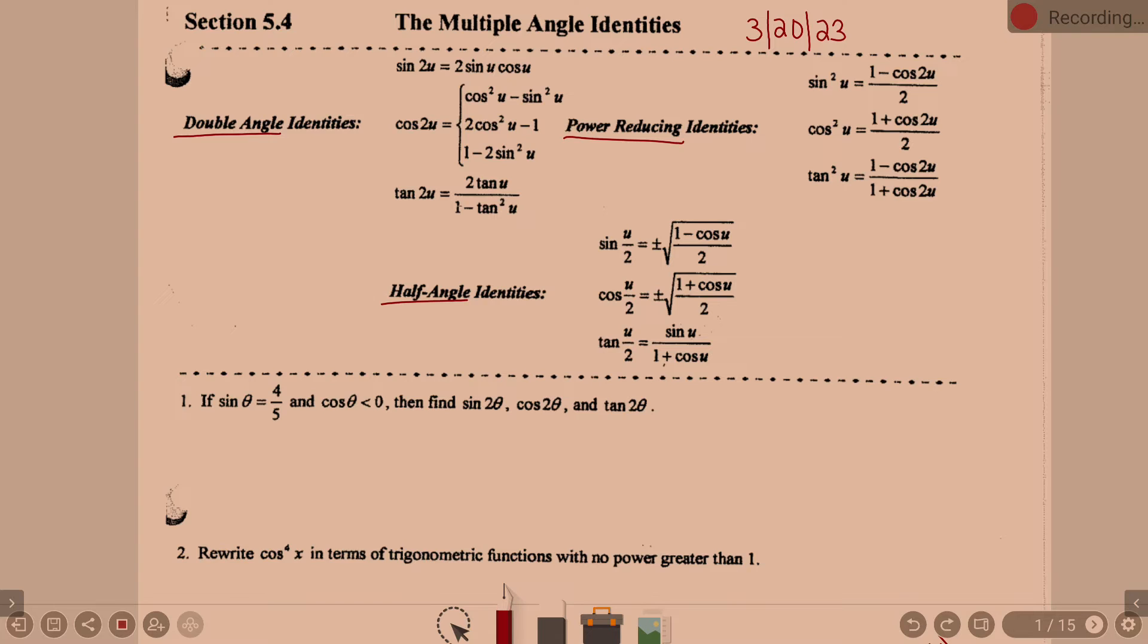Now, we'll very briefly start looking at number 1. It should sound a little familiar. If sine of theta is 4 fifths and cosine of theta is less than 0, then find sine of 2 theta, cosine of 2 theta, and tangent of 2 theta. So I'm doubling the two. Right, okay, so it's asking us to find sine of 2 theta, so on and so forth, which does mean we're going to be using our double angle identities, yes?